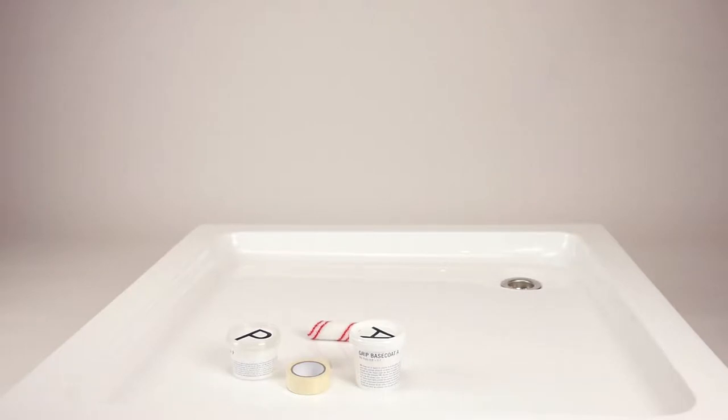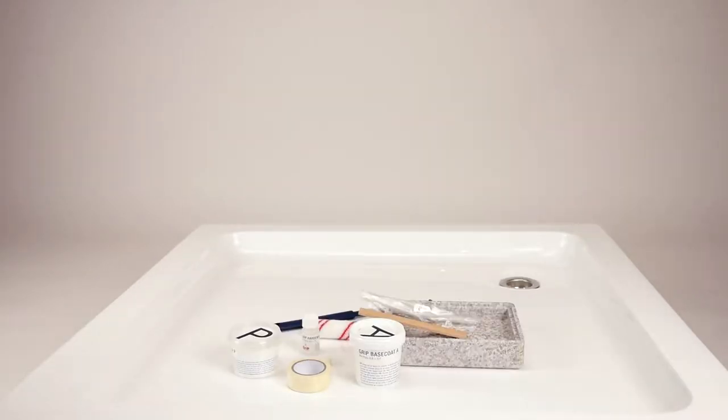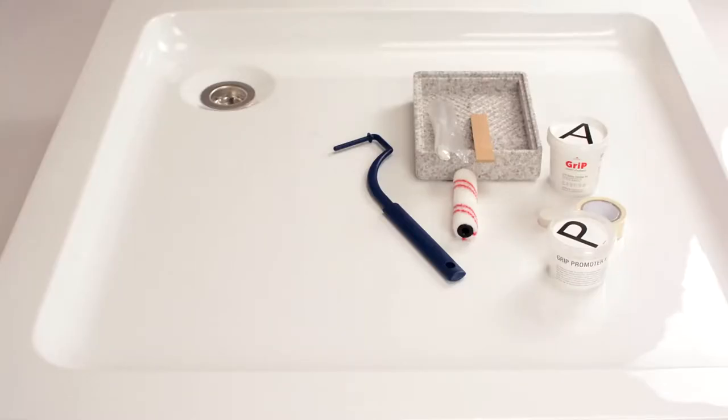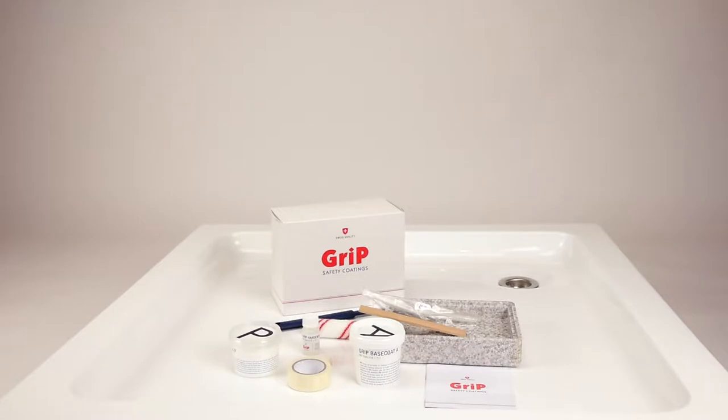The set furthermore includes component A, the grip mixture, and component B, the hardener. The package also includes a wooden stirring stick as well as a pair of gloves. The package lid serves as a tray.